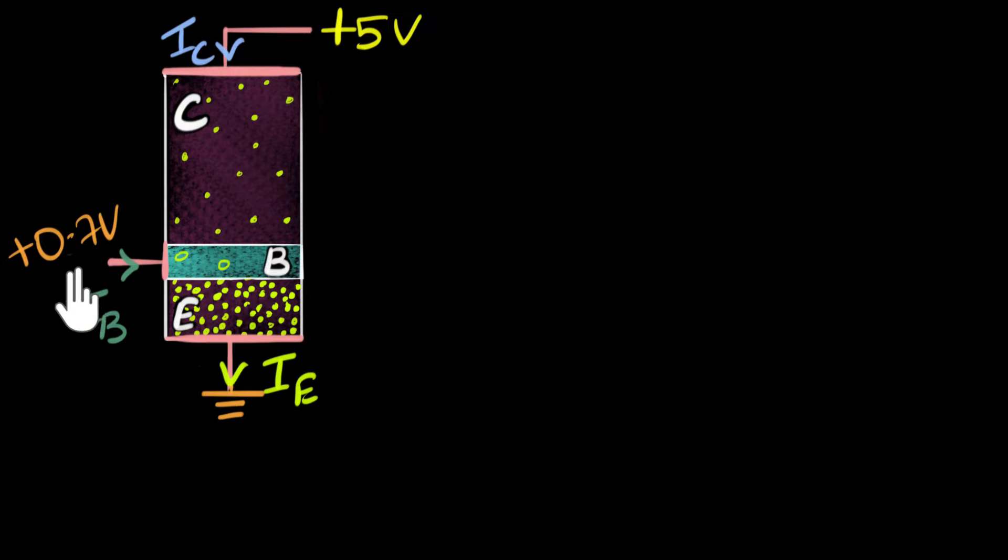This voltage is called the input voltage and this current is called the input current. And the reason for that is whatever voltage or current that you want to amplify will be connected over here, will be seen over here. And so the graph that you draw for this voltage versus this current is called the input characteristics.